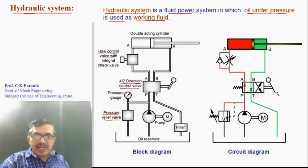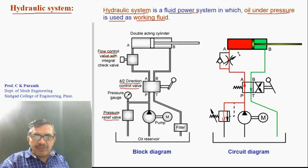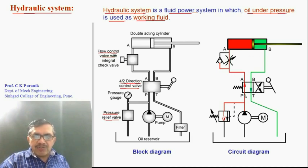The direction control valve symbol works as follows. When the lever is kept in one position, there is a connection from P to A and B to T, so the cylinder extends. When the lever is shifted to the other position, the connection is from P to B and A to T, and therefore the cylinder retracts.